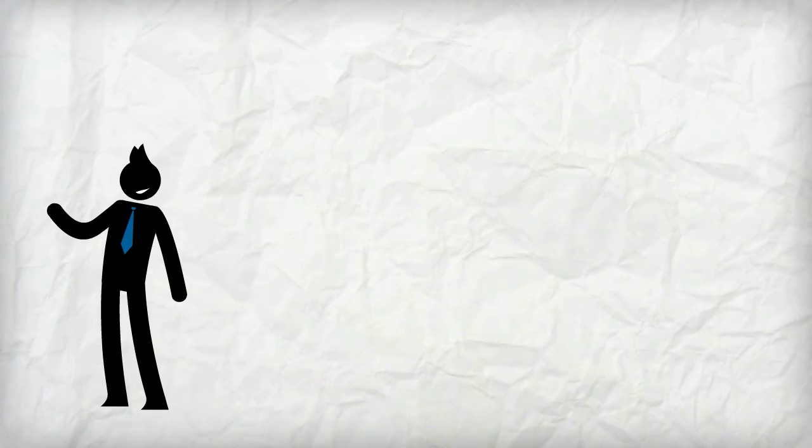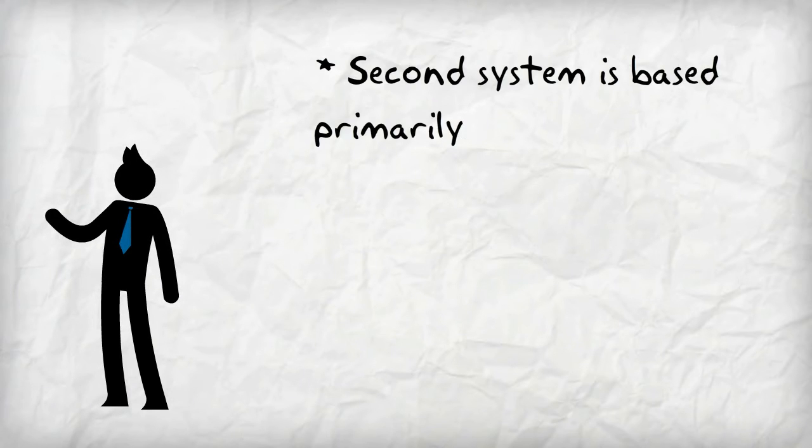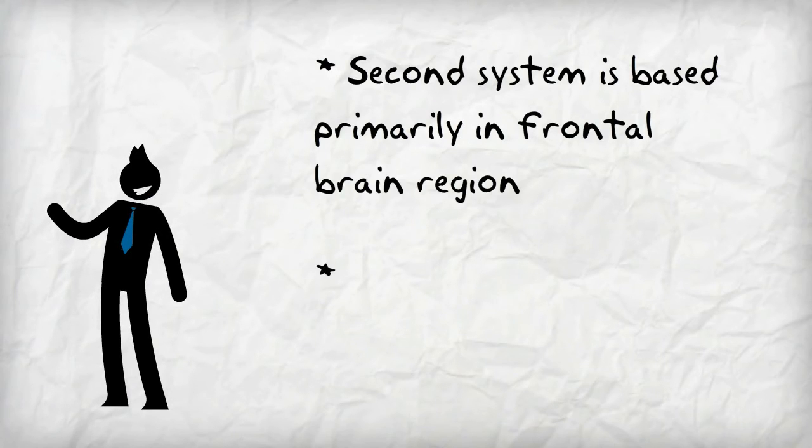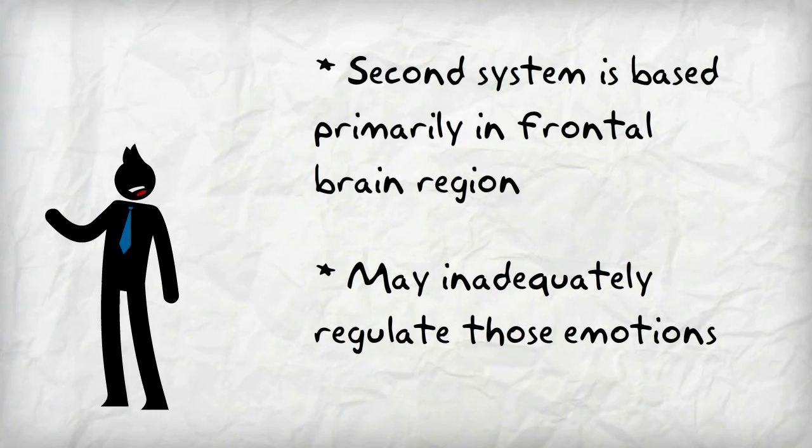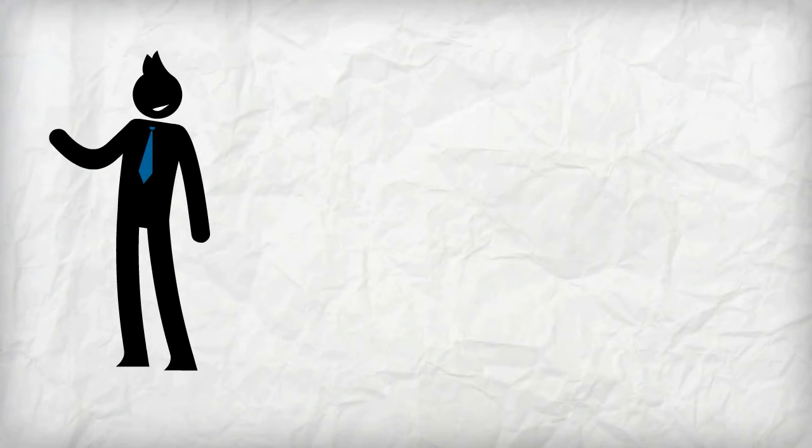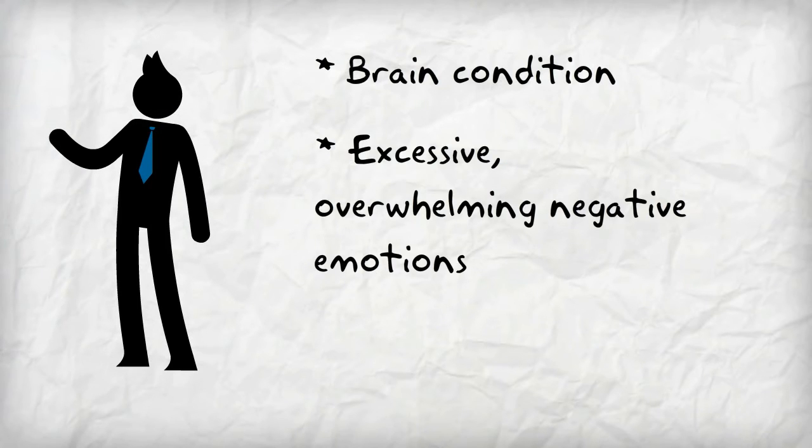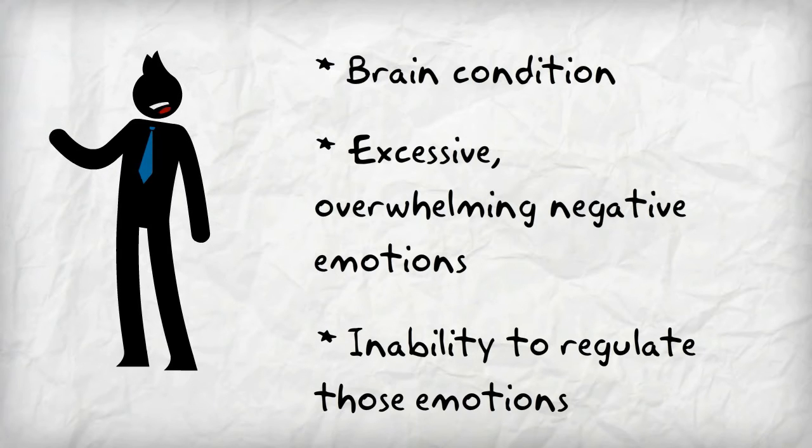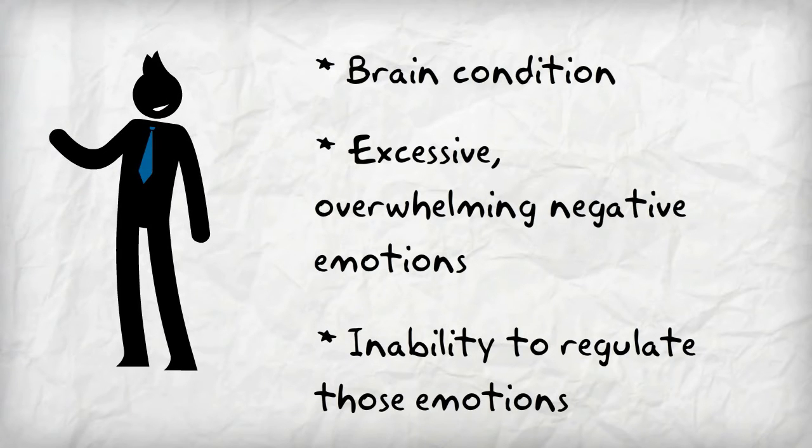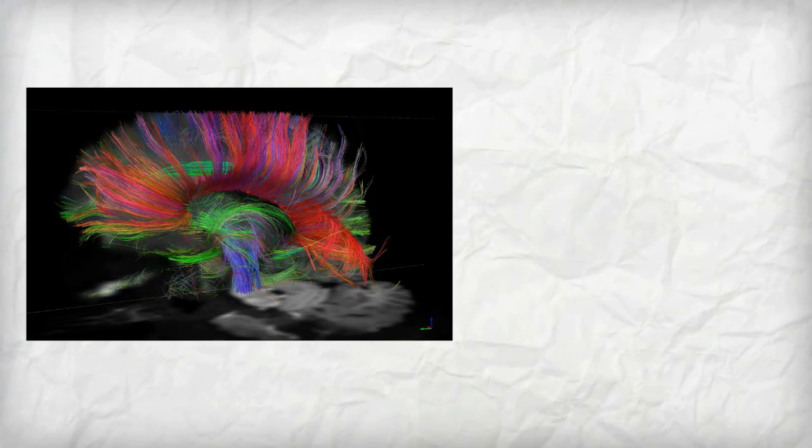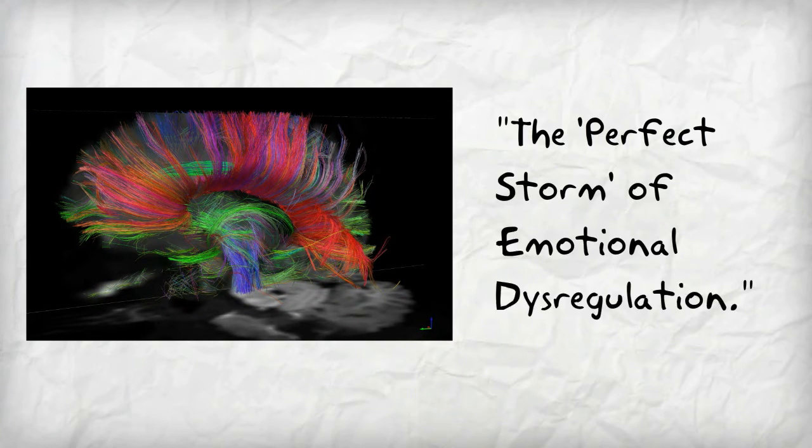The second system, based primarily in the frontal brain regions, may inadequately regulate those emotions. To simplify, BPD appears to be a brain condition characterized by excessive, overwhelming, negative emotions and an inability to regulate those emotions. Dr. Ruoco and his colleagues describe BPD as the perfect storm of emotional dysregulation.